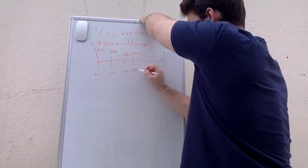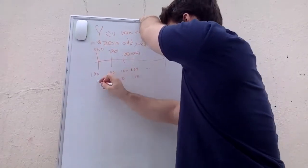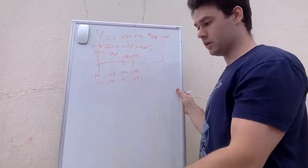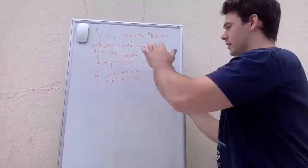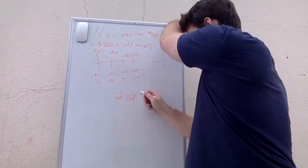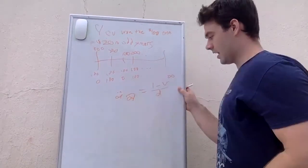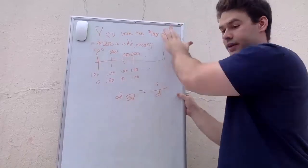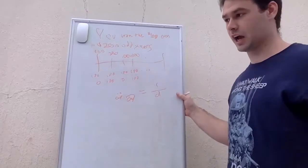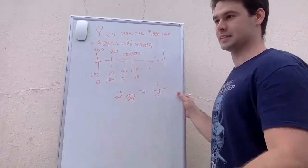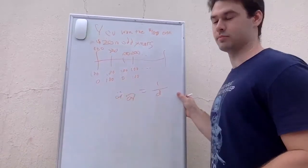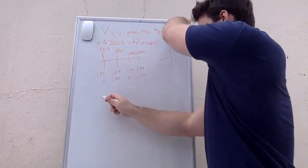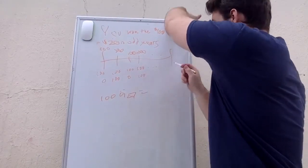The $100 every year should look familiar — it's a perpetuity annuity due going on forever. For a-double-dot-angle-infinity, we have (1 − v^∞) / d. Since v is less than one, v raised to infinity equals zero. So any perpetuity annuity due simplifies to 1/d. Note: an annuity that goes on forever is a perpetuity. With i = 6%, d = 5.66%, so the present value of the $100 per year component is 100 / d = 100 / 0.0566.